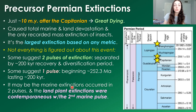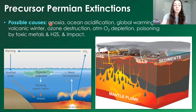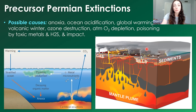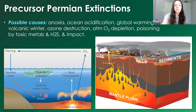Recent studies suggest marine extinctions occurred in two pulses, whereas land plant extinctions were contemporaneous with only the second marine pulse. The potential causes include ocean anoxia, ocean acidification, global warming, volcanic winter from sulfate aerosols blocking sunlight, ozone destruction by volcanic gases, atmospheric oxygen depletion, and poisoning by toxic metals and hydrogen sulfide — which is produced by anaerobic bacteria thriving in anoxic conditions and can escape into the atmosphere to harm land life.